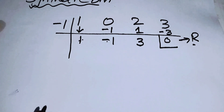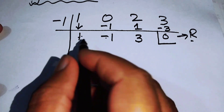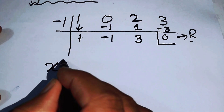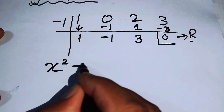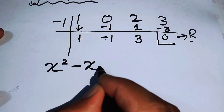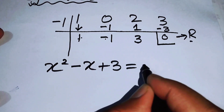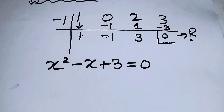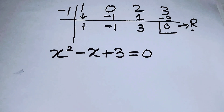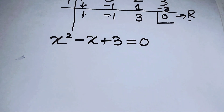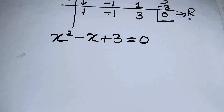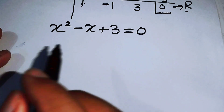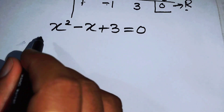We can now write the depressed equation: x squared minus x plus 3 is equal to 0. This depressed equation is a quadratic equation, and we will solve it using the quadratic formula.